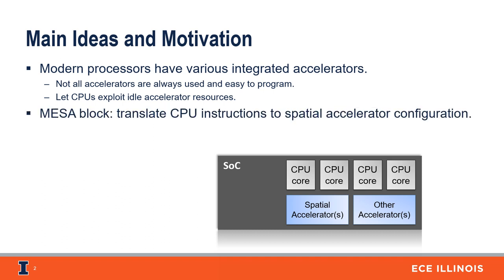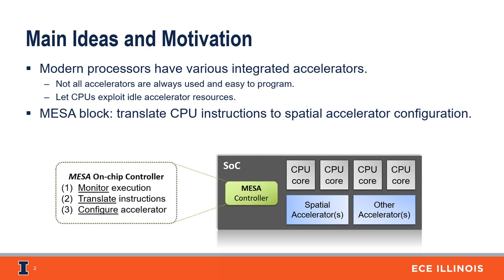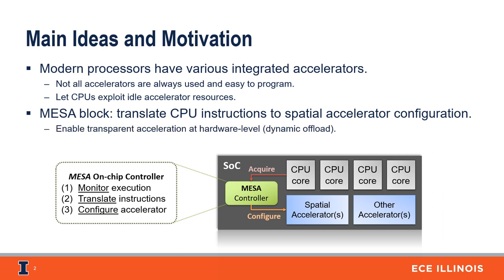In this paper, we focus on spatial accelerators that can be reconfigured. We propose adding an on-chip hardware block called MESA that can monitor execution, translate the CPU's instructions to configure the spatial accelerator, and finally allow dynamic offloading and thus transparently accelerate without requiring changes to the program code or requiring recompilation.